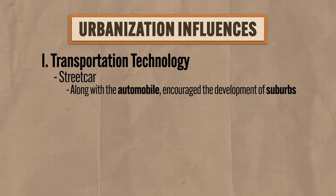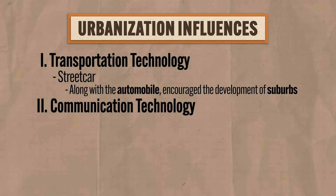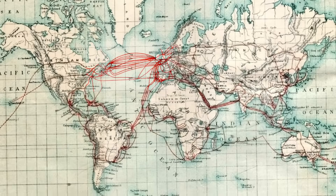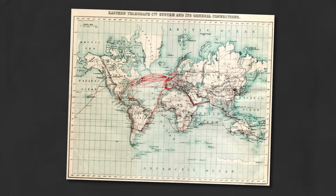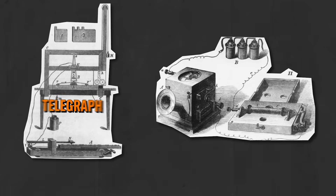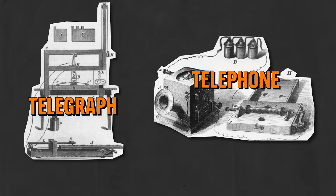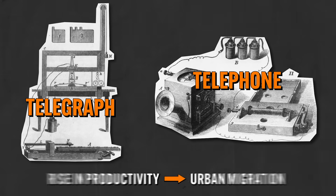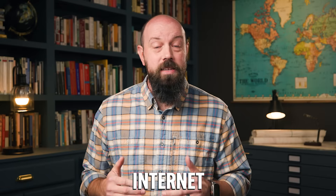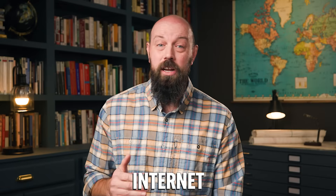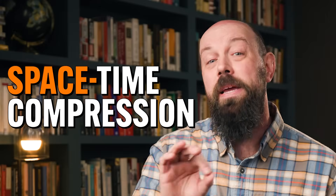The second factor influencing urbanization is changes in communication technology. Because cities are nodal entities that thrive on connection, new communication technologies have a significant influence on their growth. With the rise of the telegraph and then the telephone, urban businesses became more efficient due to increased speed of communication, which led to a rise in productivity and required more workers in urban areas. Now with the rise of the internet, urban businesses can communicate instantly with customers all over the world — this is the concept of space-time compression from Unit 1.